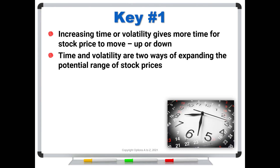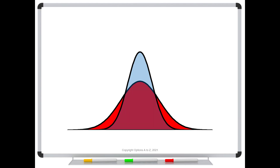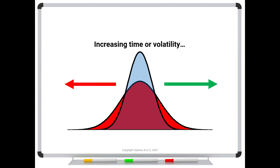Graphically, you can think of time and volatility as forces that flatten and widen the bell curve. A current stock price has an implied bell curve sitting over its head, dictated by volatility. At a current stock price and volatility, there's only so high and so low we can expect prices to go. But if we increase time to expiration — say from a 30-day to a 90-day option — or if volatility increases, the curve changes from the blue to the red: flatter and wider. Increasing time or volatility means more potential for stock prices to rise, but also more potential to fall.